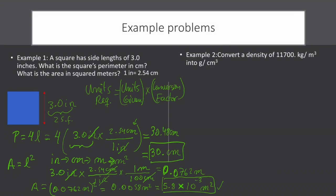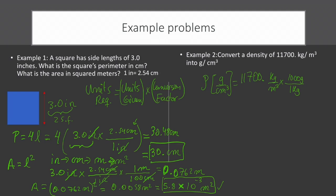Moving on to the second problem: convert a density of 11,700 kg per cubic meter into g per centimeter cubed. We want a density in g per cm³ and we start with 11,700 kg per m³. First, we convert the kilogram: for every 1 kilogram we have 1,000 grams. Next, we convert the meter: for every 1 meter we have 100 centimeters. Notice that we have meter cubed on the bottom, so we need to cube the conversion factor.